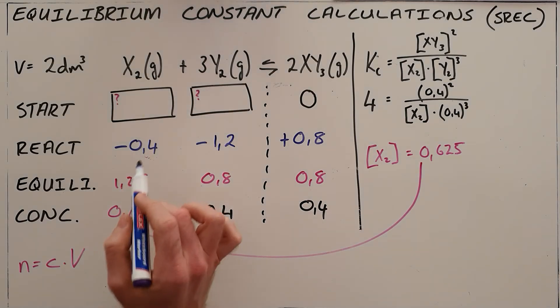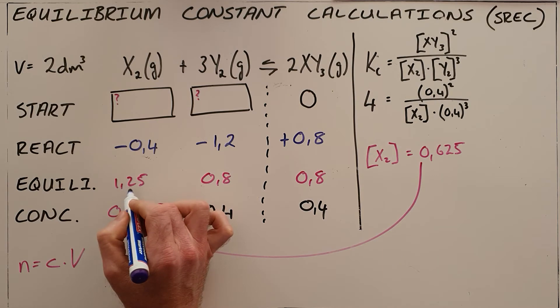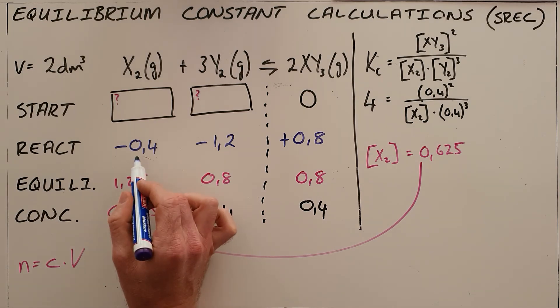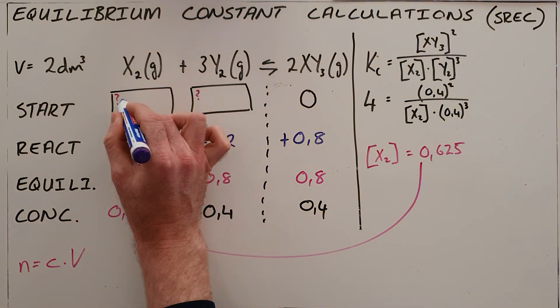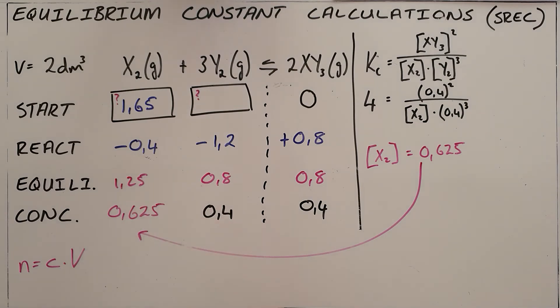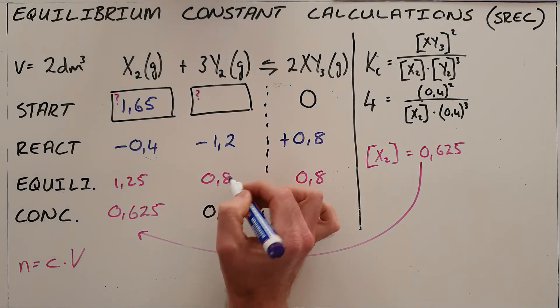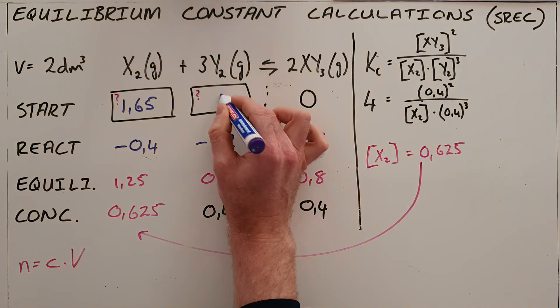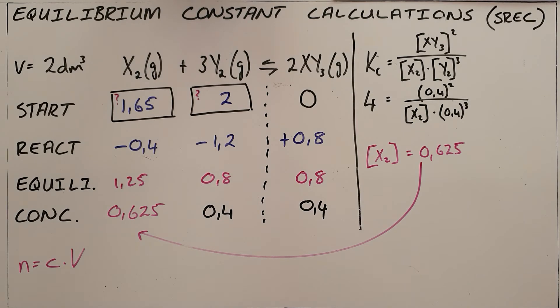What we can tell then is that if we end with 1.25 moles at equilibrium after having lost 0.4, that means we must have started with 1.65 moles of x2. And if we end up with 0.8 after having lost 1.2 moles, we must have started with 2 moles of y2.